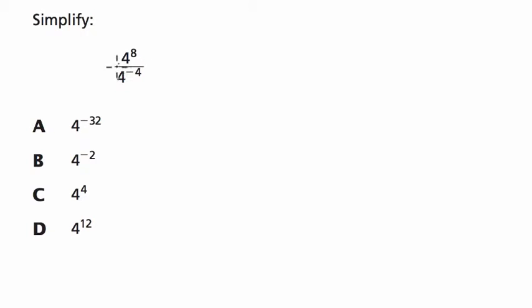Alright, so they're telling us to simplify this expression. 4 to the 8th power—that means multiply 4 by itself, over and over again. Multiply out 8 fours. And they have 4 to the negative 4th. This means we start with 1 and divide by 4, four times. They're asking us which one of these expressions represents this process.